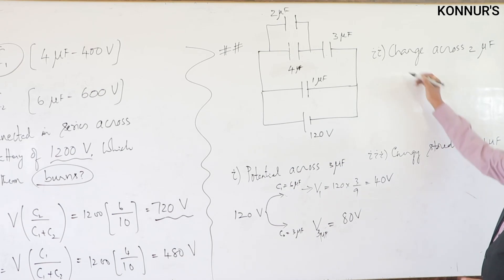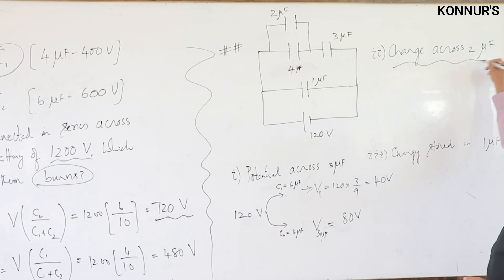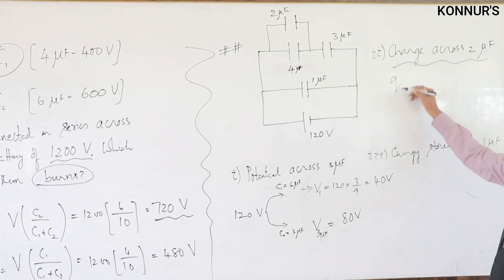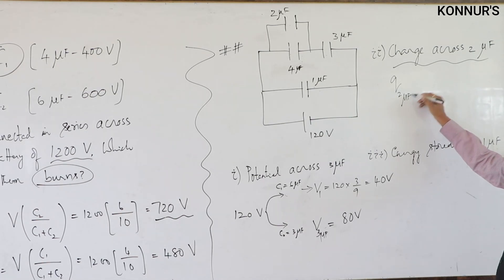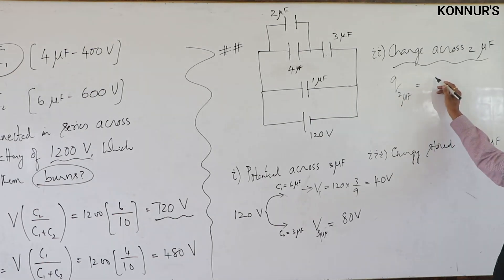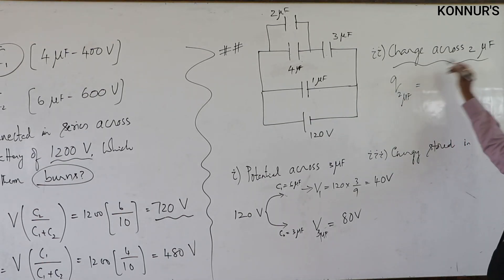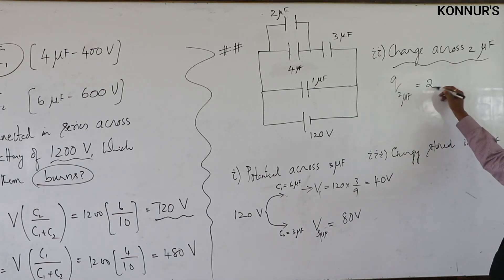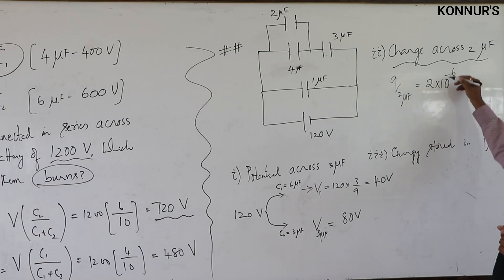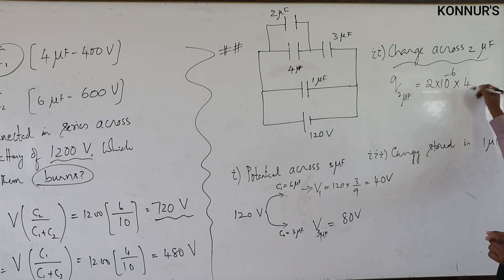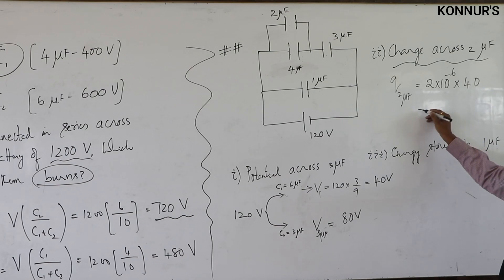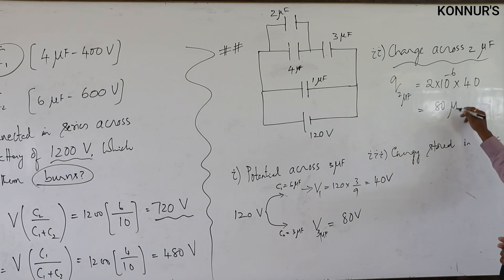Charge on 2 microfarad: Q = CV = 2×10⁻⁶ × 40 = 80 microcoulombs.